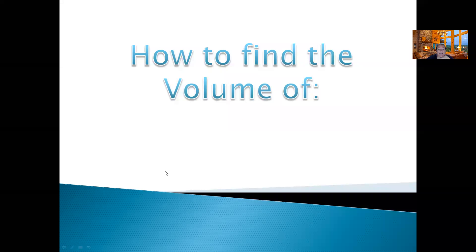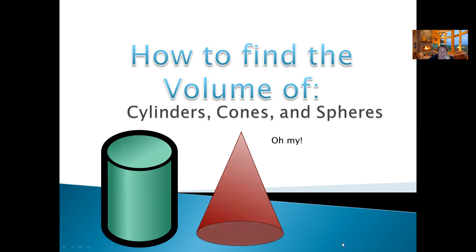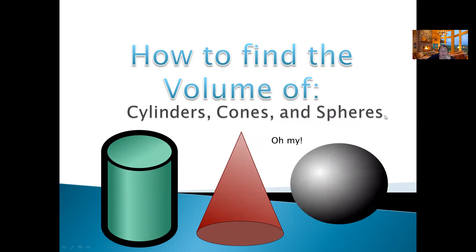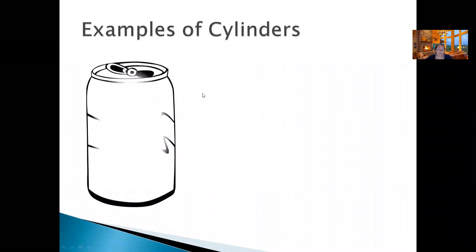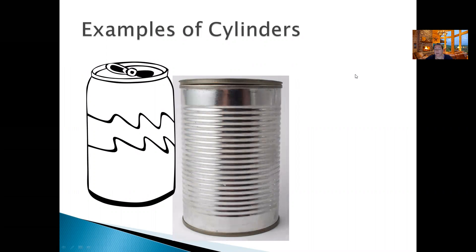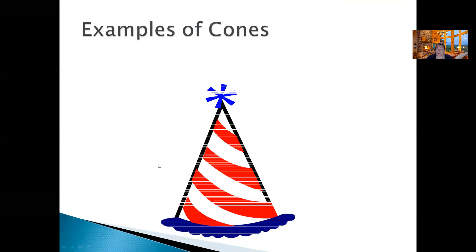Hello everybody, today I will be teaching you how to find the volume of cylinders, cones, and spheres. So exciting, right? But you always wanted to know how to do this, or maybe you already learned how to do it and it's been a while and you just need to refresh your memory. Cylinders normally are like cans — like a can of beans or a soda can. It has two circles on the top and then a rectangle going around, and that's a cylinder.